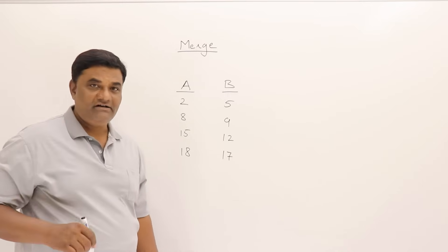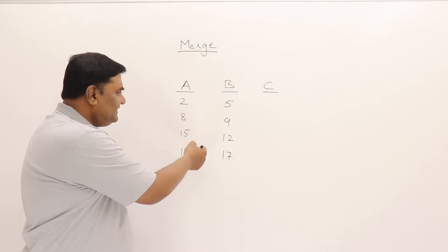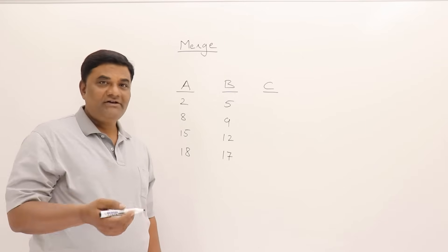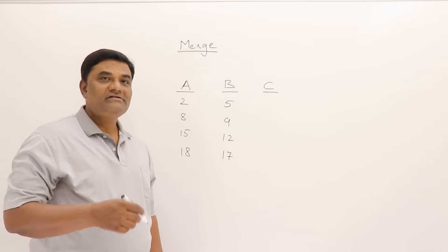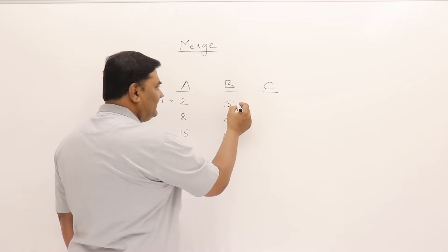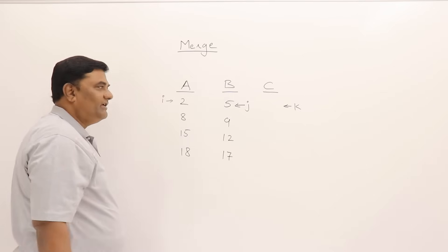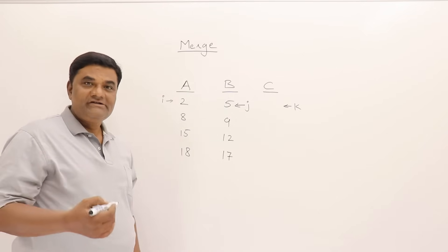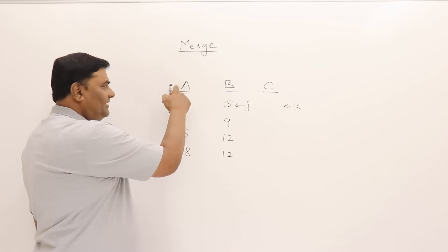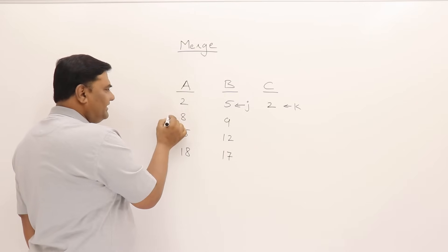I will prepare a third list C to hold the result. These lists can be arrays or linked lists — irrespective of data structure. For each list I need an index pointer: I for list A, J for list B, and K for list C, which starts as an empty list. The procedure starts: compare A[I] with B[J]. If A[I] is smaller, copy that element into C[K].